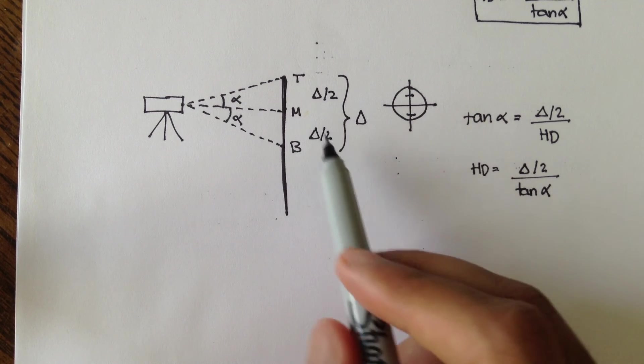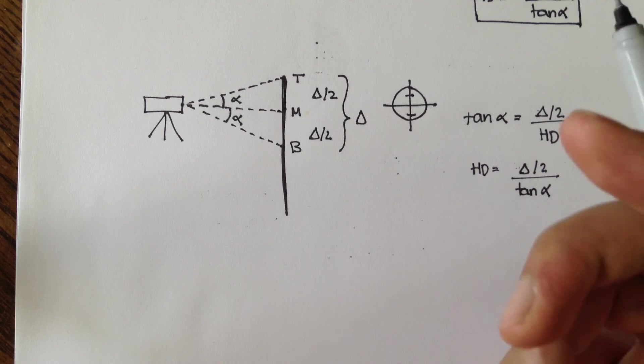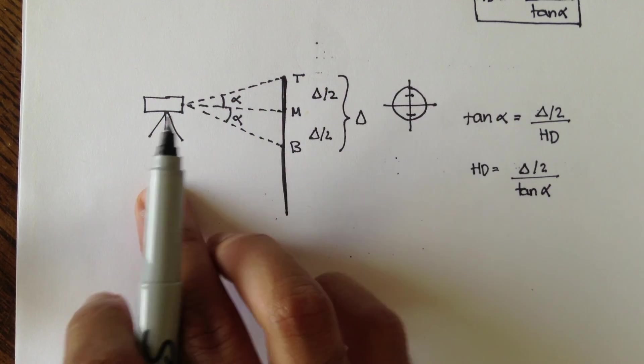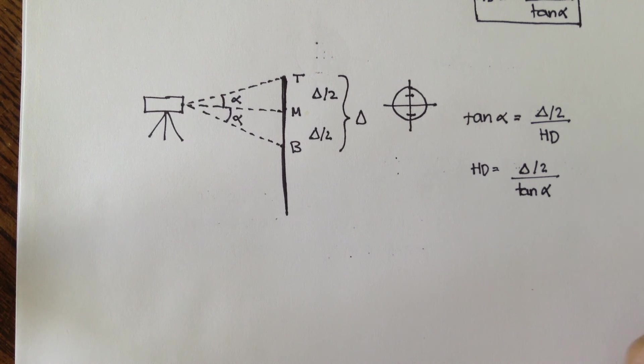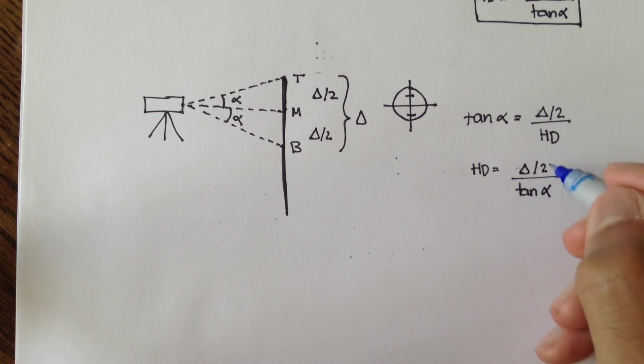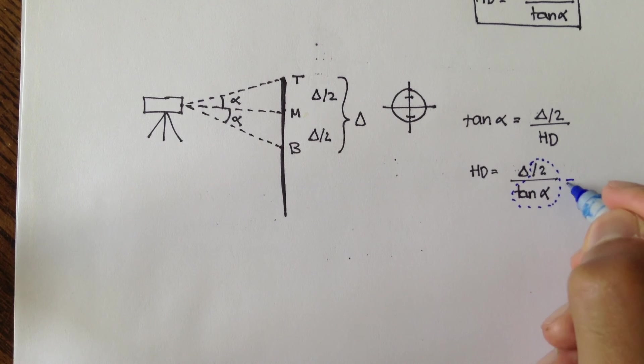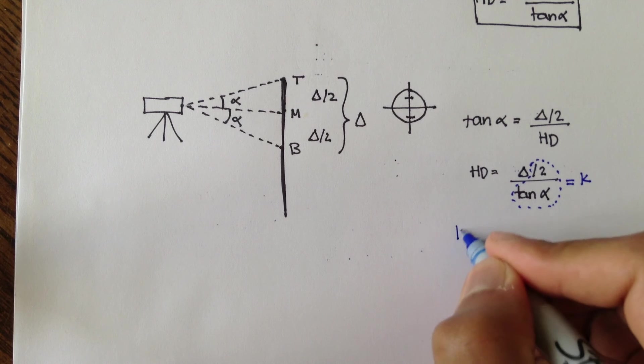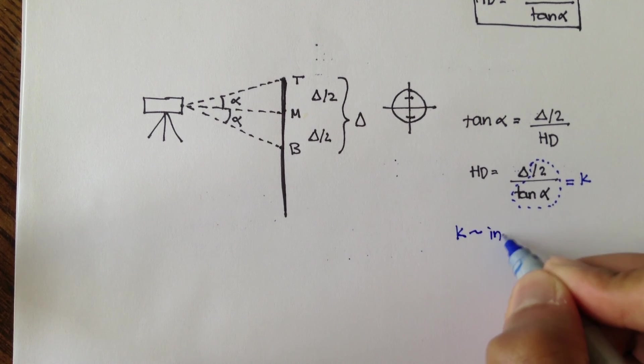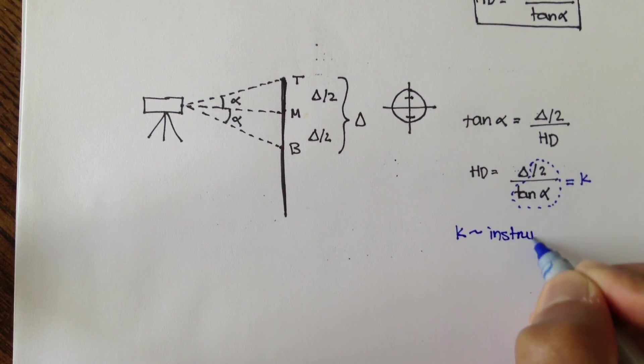Your delta can be different heights, or different measurements, depending on how close or how far the rod is from your instrument. So, really, we can say that the divided by 2 and the tan alpha, we can consider that a constant, because that doesn't change for all the readings we take. It's always constant. So, let's call that constant K. K stands for the instrument constant.